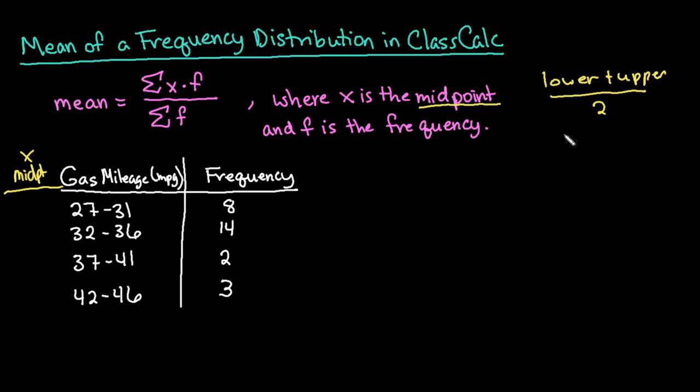So for the first one, I would just take the 27 plus the 31 and divide this by 2. When I do that, I get 58 divided by 2, which gives me 29. So I could do the same process for the rest of these.